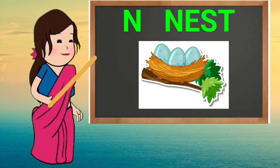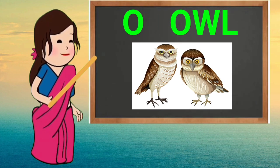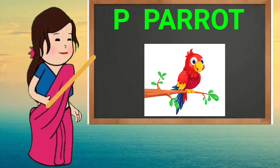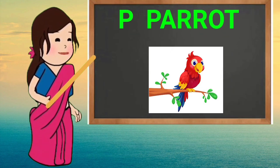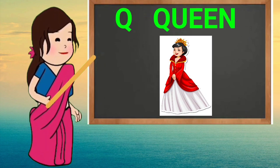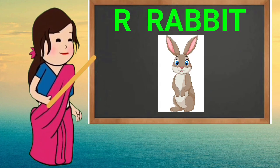N for nest, O for owl, B for parrot, Q for queen, R for rabbit.